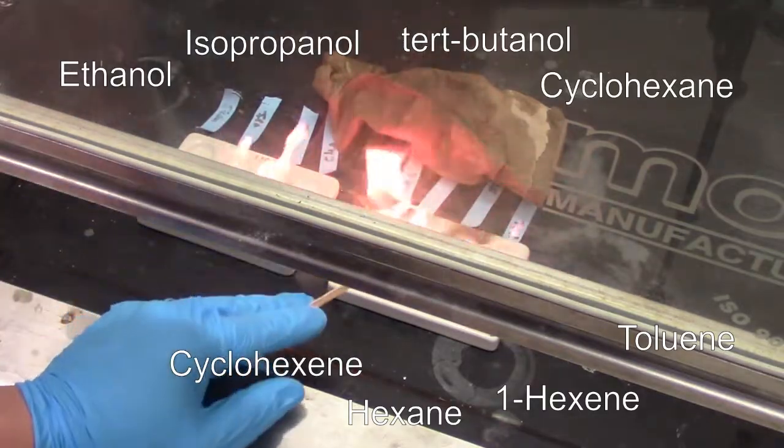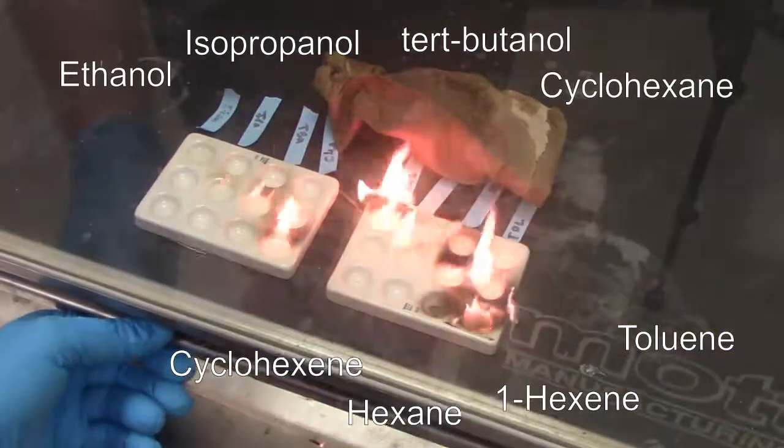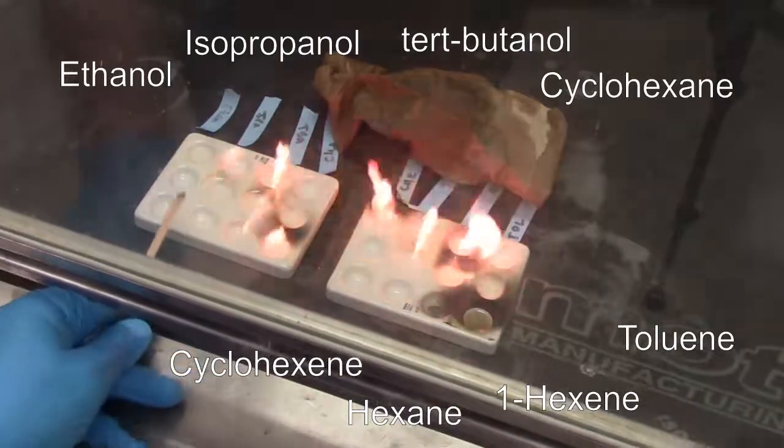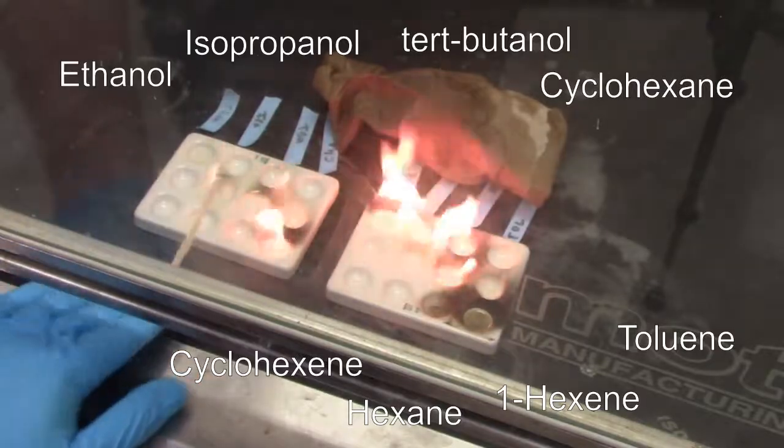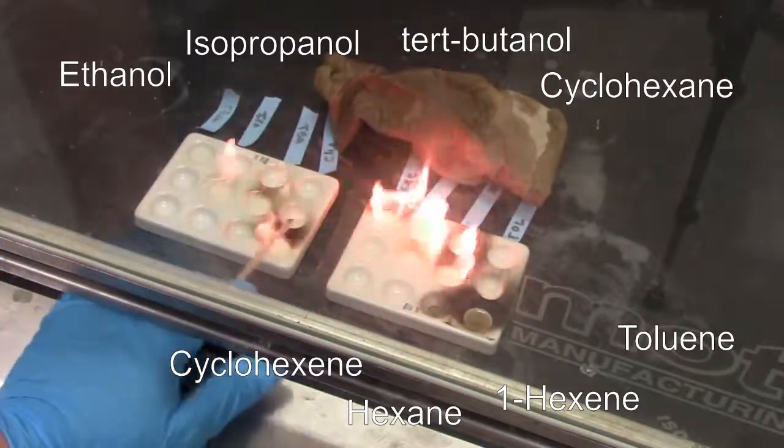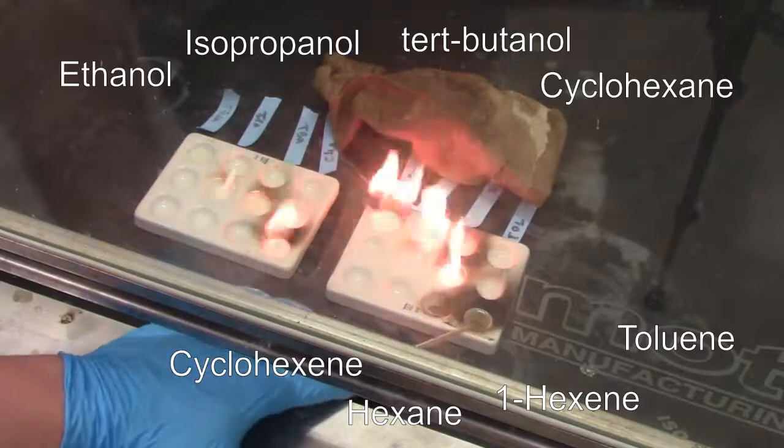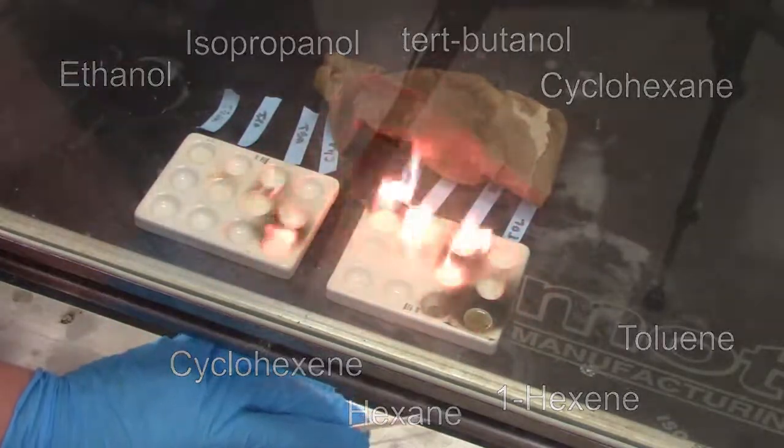So our alkenes here are going to burn less cleanly than our alkanes, and our alcohols are going to burn even more cleanly than them. So this is the result of our combustion test. The alcohols burn pretty clear, the alkanes burn very clear, and our alkenes, particularly something like our toluene, are going to burn very dirty with a lot more soot.